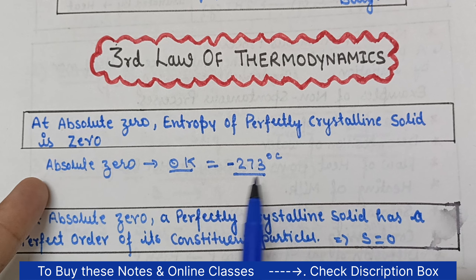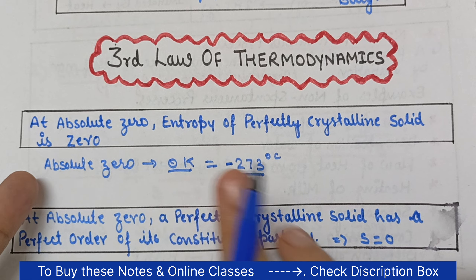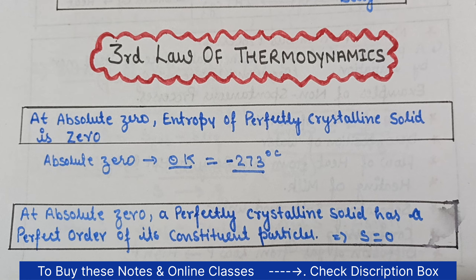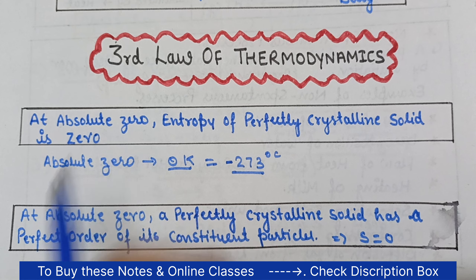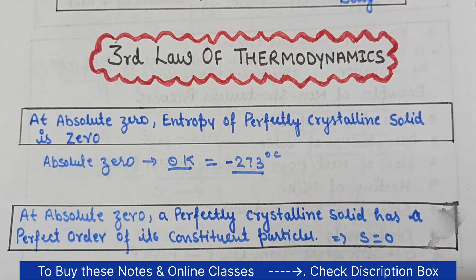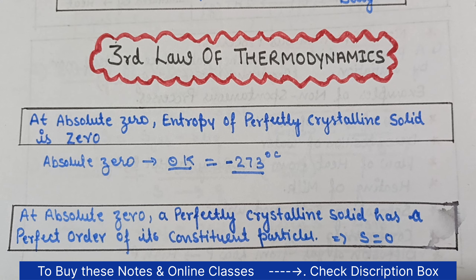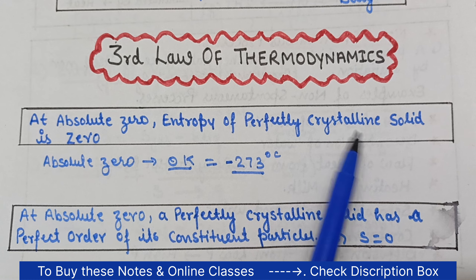At this temperature, a perfectly crystalline solid — which is perfectly crystalline — has an entropy of zero. This is the third law of thermodynamics. At absolute zero, meaning zero Kelvin temperature, the entropy of a perfectly crystalline solid is equal to zero.